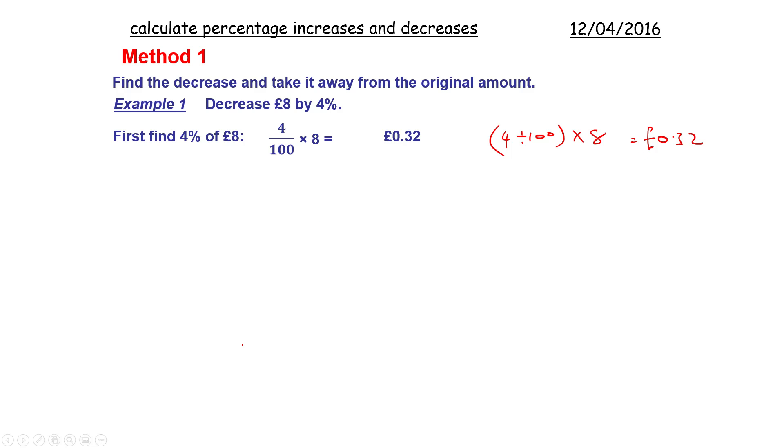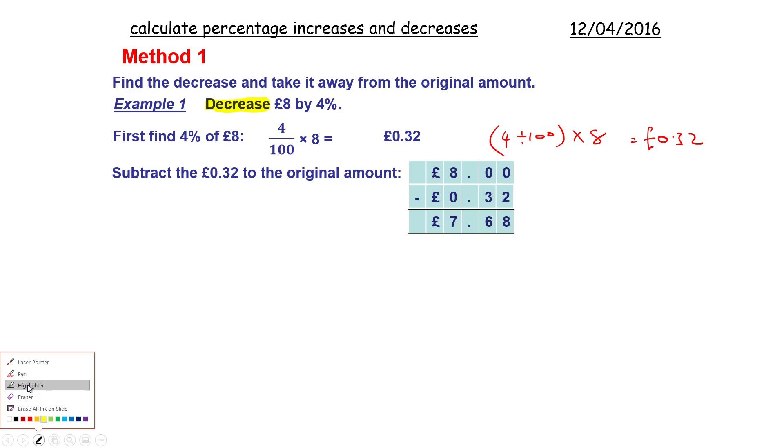And then we... sorry, because we're decreasing - we are decreasing, but remember that we're going to, let me just highlight that, decrease. Because we're decreasing, we have to take away this time. So we take 32 pence away from eight pounds. That leaves us with seven pounds 68 pence. Good.